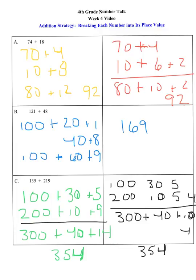And that strategy is breaking each number into its place value, or it's also known as expanded form, or sometimes the kids will hear it called left to right addition. Thank you.